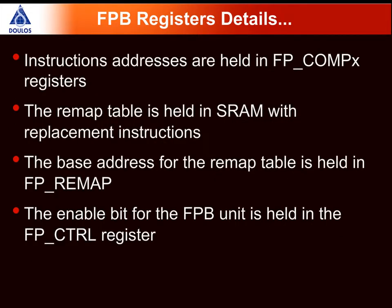We can now look at some of the register details. To configure the FPB, we access some memory-mapped registers. The most important are the FBComp registers, which are used as address comparators. The vast majority hold instruction addresses, but some are also used to hold addresses for literals. In addition, the FPB relies on what's called the remap table — a table of instructions or literals that will be used as replacements. This table is typically held in RAM, but could also be in flash. In any case, it will be located in a region of memory outside of the code region of the Cortex-M3. The base address of that remap table is held in a memory-mapped register called the FPRemap register.